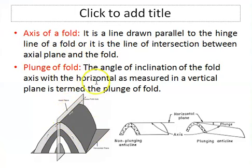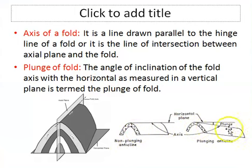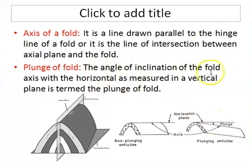Plunge of fold: the fold axis may be vertical, inclined, or horizontal. If the fold axis is horizontal, it has a zero plunge and such folds are known as non-plunging folds. But when the fold axis is inclined, as shown in this diagram, it makes an angle with the horizontal plane — this angle is known as the plunge of the fold. Plunge is the angle of inclination of the fold axis with the horizontal, measured in a vertical plane.